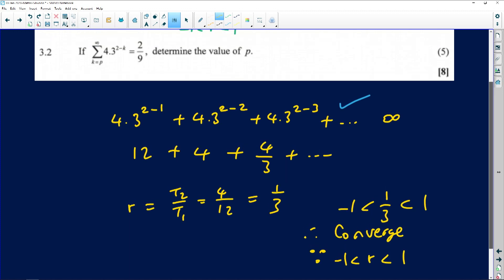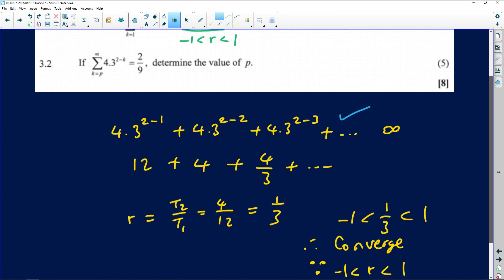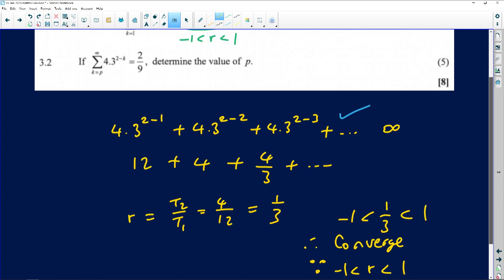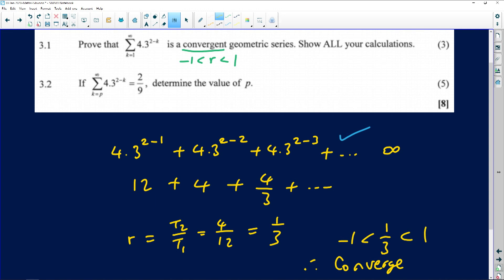Now, quickly, the last question is asking us to work out the value of p if the sum to infinity starting at p equals 2 over 9. Now, this is a tricky question, which might not have enough time for this, but we'll see, we'll just share the general idea behind what you need to do.